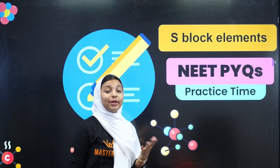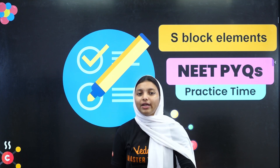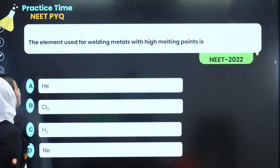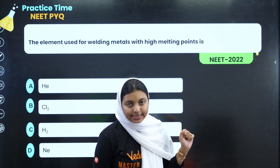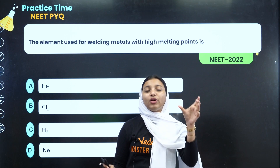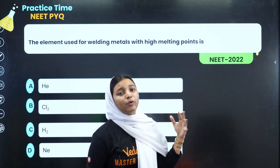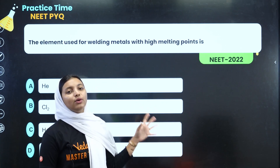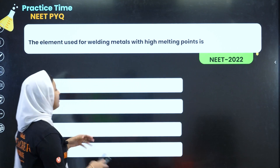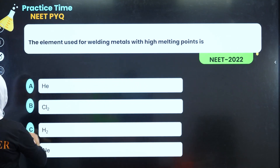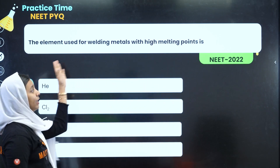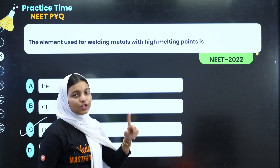We have to learn a lot about S-Block. We will do the previous year questions. First question: the element which is used for welding of metal with high melting point is? Since we are covering NCERT textbook questions on S-Block and D and B Block, the answer is H2 — the hydrogen molecule is used for welding metals with a high melting point.